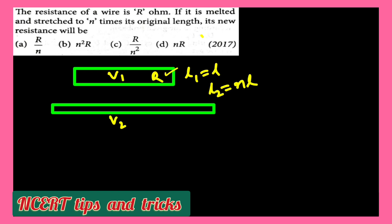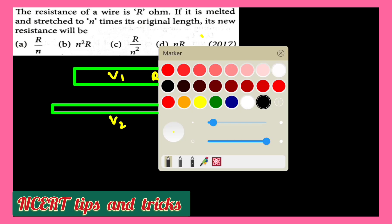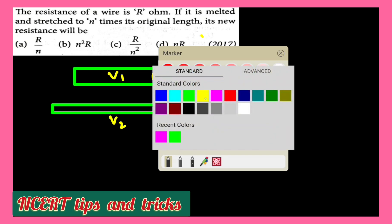If it is melted and stretched out to n times, means L1 equals L, L2 equals n times L. So how are we going to solve this problem?